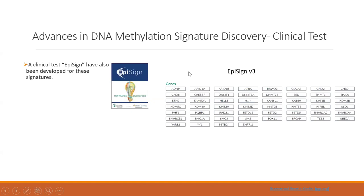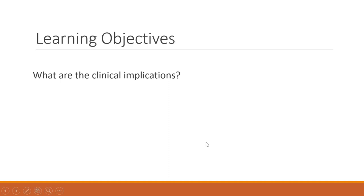A clinical test called EpiSign has also been developed through Greenwood Genetic Center, covering a broader list of genes and their associated disorders for which DNA methylation can be assessed clinically.